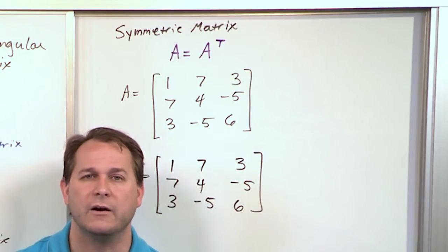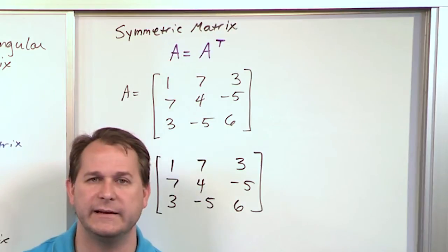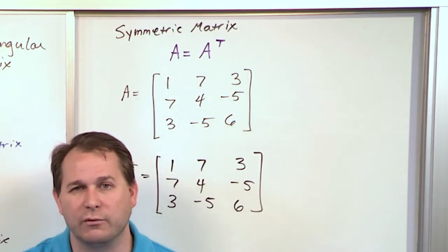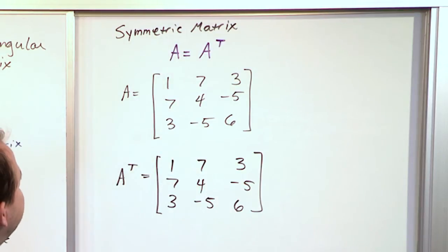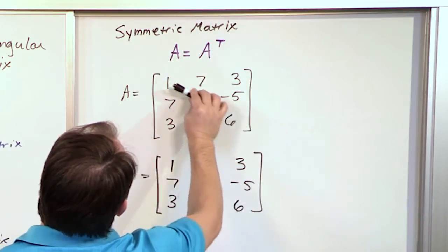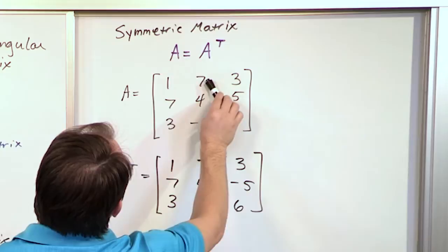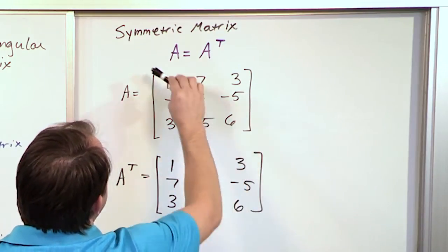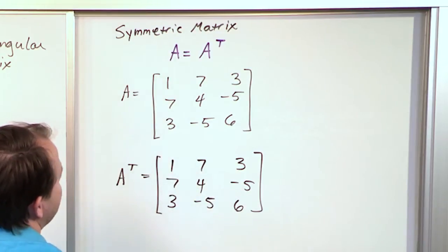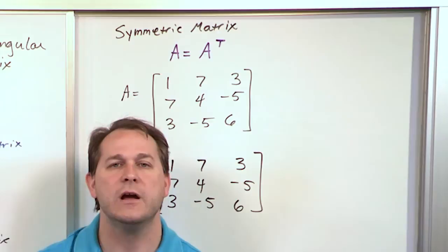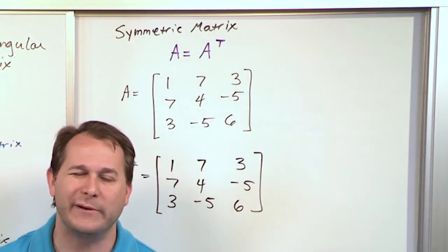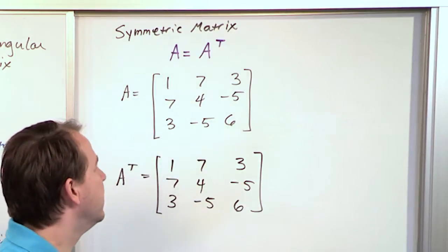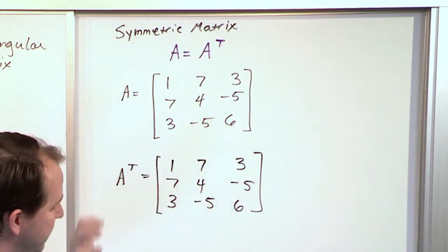That's why we call it symmetric. In general, that's not going to be the case — if you have a weirdly shaped matrix, flipping the columns into rows will give you something different. But this particular matrix is special. If you were to put a sheet of paper along the diagonal, you'd notice a mirror image: the 7 is mirrored on both sides of the diagonal, the 3 is mirrored on both sides, and −5 is mirrored on both sides. The diagonal elements themselves — 1, 4, and 6 — remain in the same place. If you fold the matrix in half like a sandwich, you get a mirror image across the diagonal. That's why we call it symmetric.